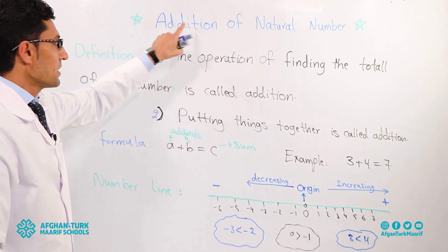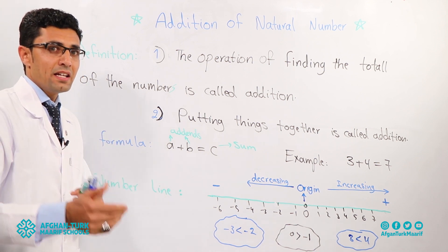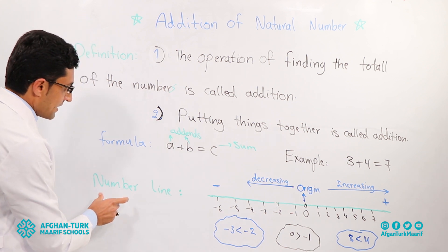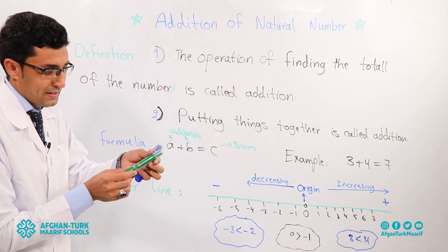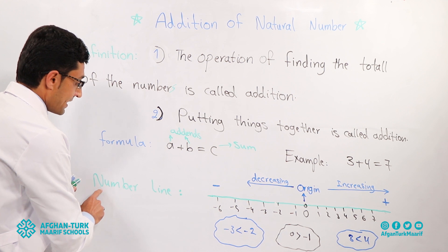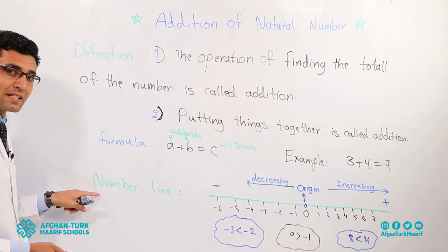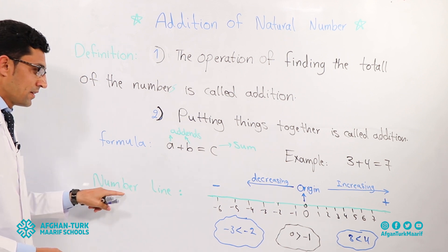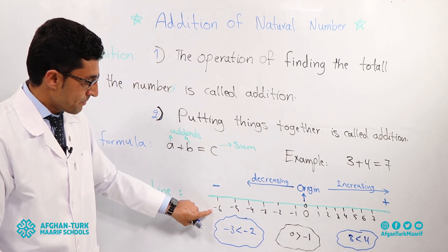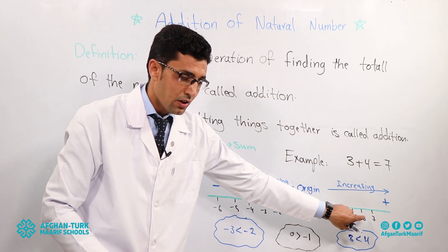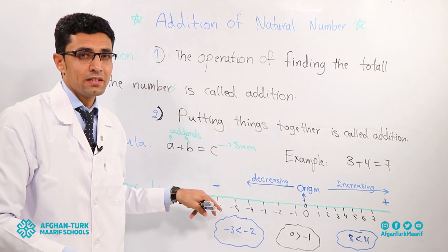We studied the definition of addition of natural numbers. Now let's study one new subject: the number line. A number line is a line which has numbers — all real numbers are on the number line.